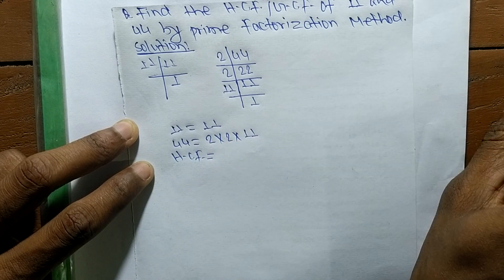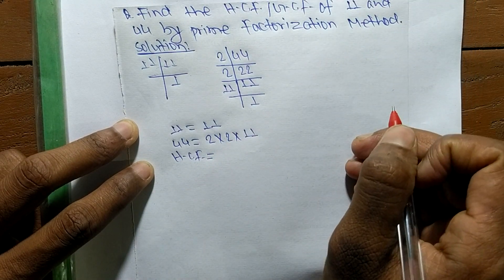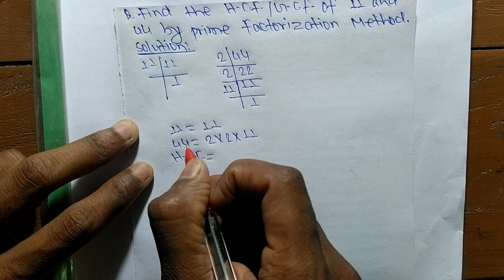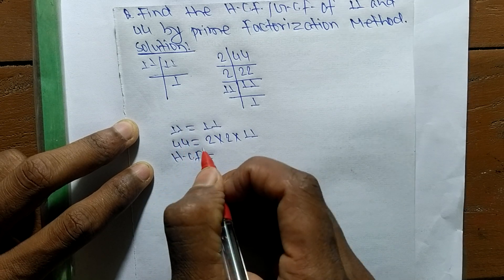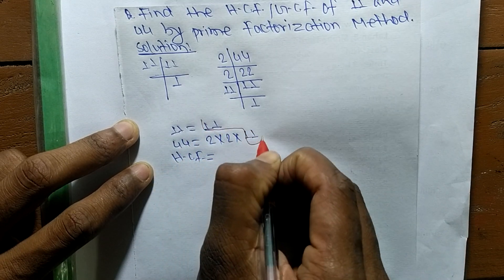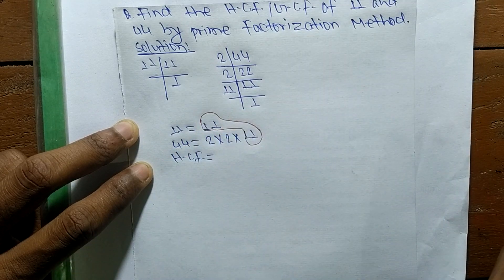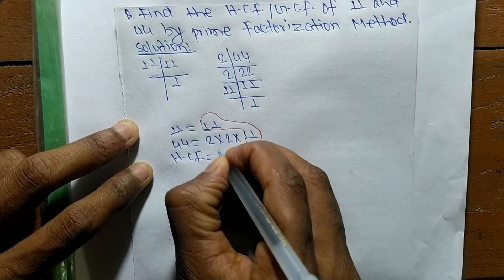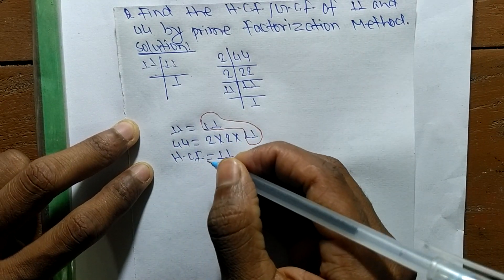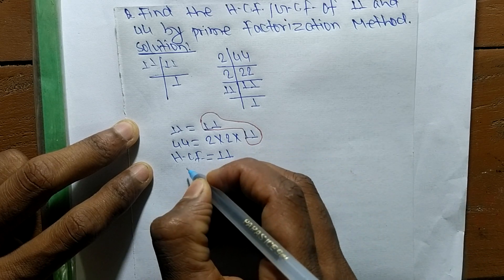To find the HCF, we identify the common factors in the prime factors of 11 and 44. The common factor here is 11, so the HCF equals 11, meaning 11 is the highest common factor of 11 and 44.